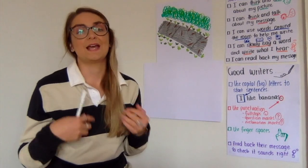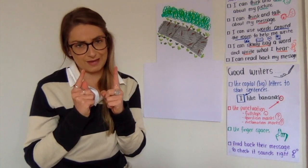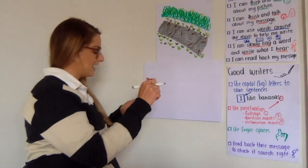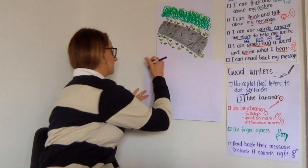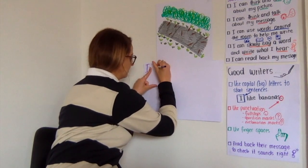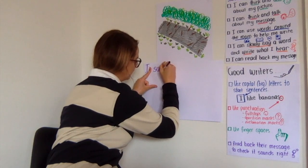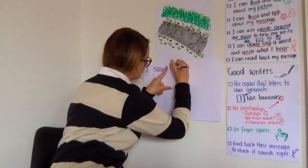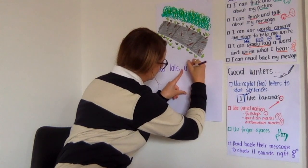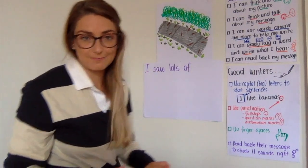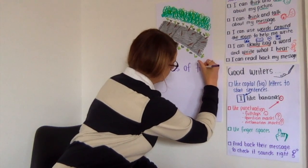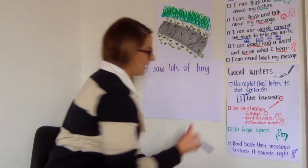They weren't blue-tongue lizards — they were the tiny little baby ones. I think they're called skinks. So I'm going to start with 'I', which you all know how to do, and it's a big letter because it's a starting sentence. I saw lots of... Now I'm going to say 'tiny' because that's what they are. Or you could say 'small' — tiny lizards.